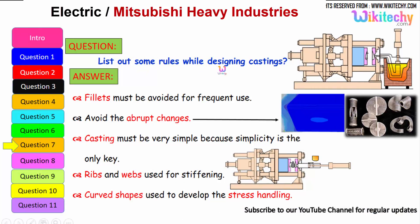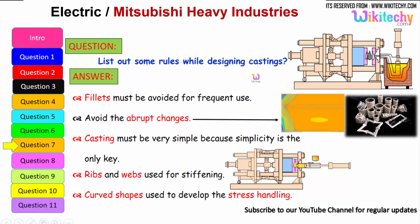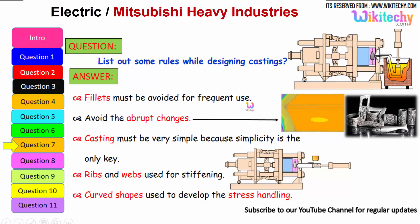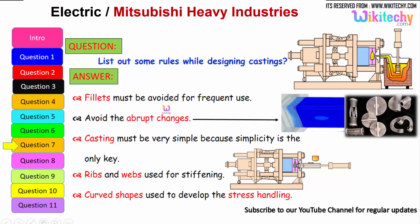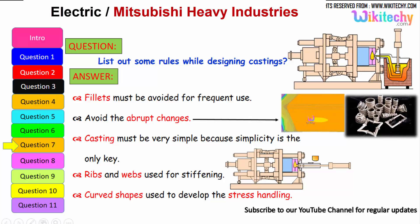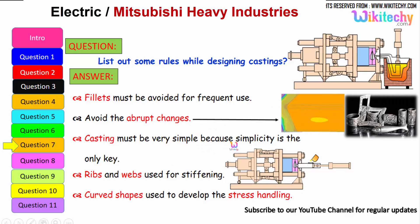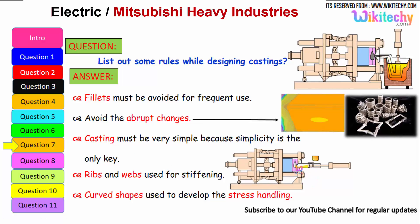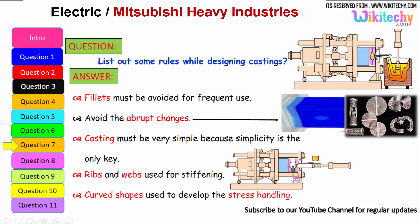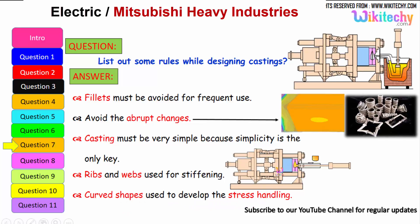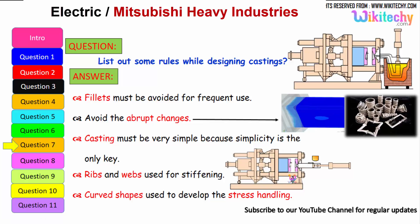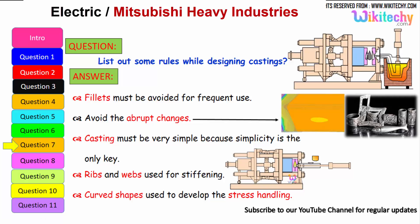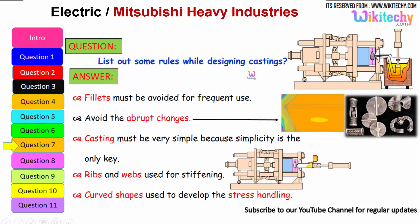Let us see some rules while designing castings. Fillets must be avoided for frequent use — that is the first rule. Avoid abrupt changes. Casting must be very simple, because simplicity is the key. Ribs and webs are used for stiffening — you should have ribs in the design. The curved shape should be used to handle stress — a curved shape helps avoid stress concentration. These are all rules to follow for castings.